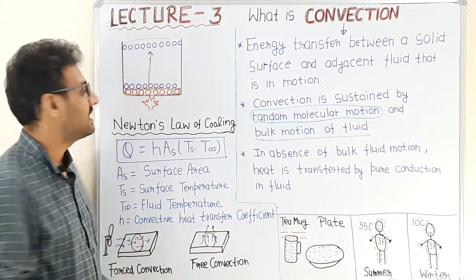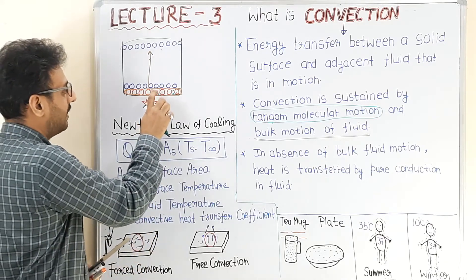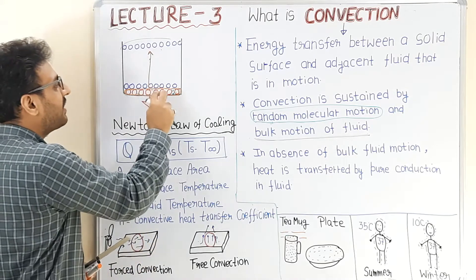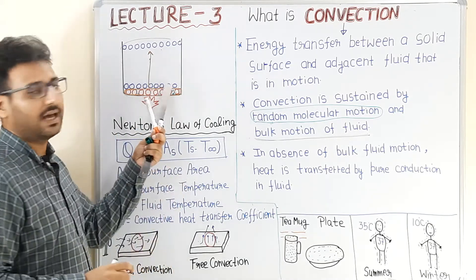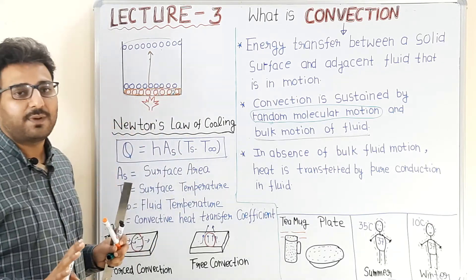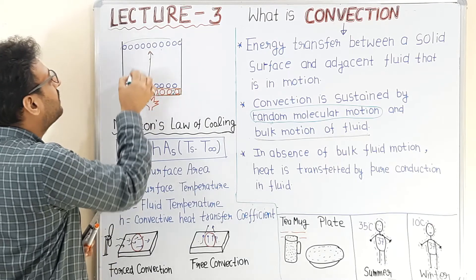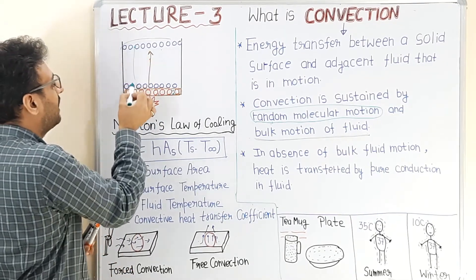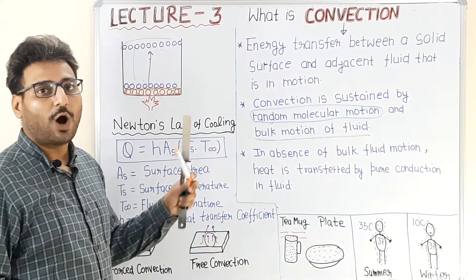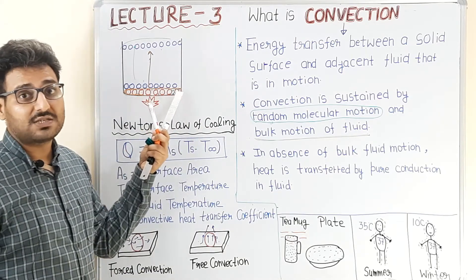Consider the second case where the layer of fluid is not moved and remains at its place. Due to random molecular motion, it will collide with the second layer which is having low temperature, and after collision it will transfer its heat to the second layer. There is no bulk fluid motion; the layer remains at its place. Heat is transferred by molecular collision, and this process continues up to the topmost layer of the fluid.